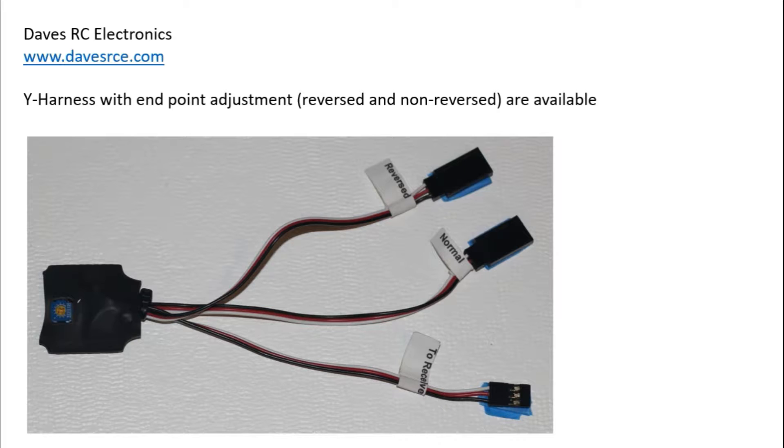If you just need a standard Y-harness, that's easy. But this allows you to change the endpoint of one of the servos, which is especially helpful on flaps and ailerons. There's two versions: one with a reverse second channel and one without the reverse channel.